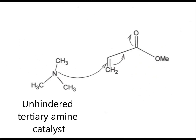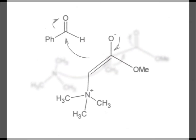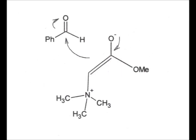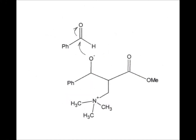The nucleophilic addition of the catalyst onto the alpha, beta unsaturated ketone gives a zwitterionic intermediate, which will add to the electrophilic aldehyde. A keto alcohol is produced.